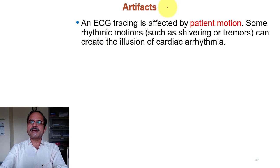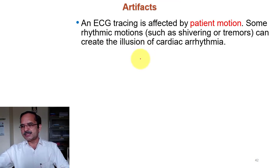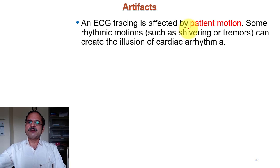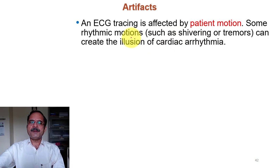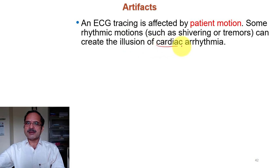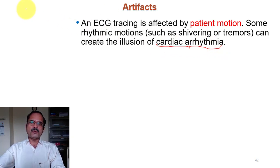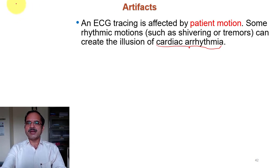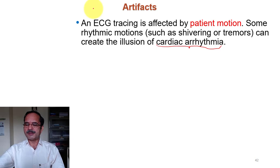The ECG tracing is affected by patient motion. When measuring the ECG waveform by placing electrodes on the body of the patient, there will naturally be some motion by the patient, and because of that, some artifacts or noise is produced. This may give the illusion of cardiac arrhythmia — because of noise, some different type of pulse may be present, and the doctor may predict it as some irregularity in the beating of the heart.